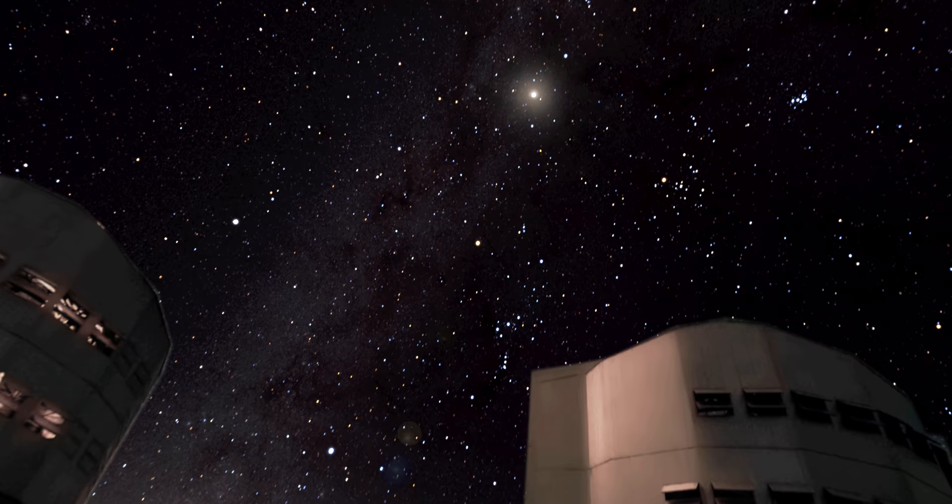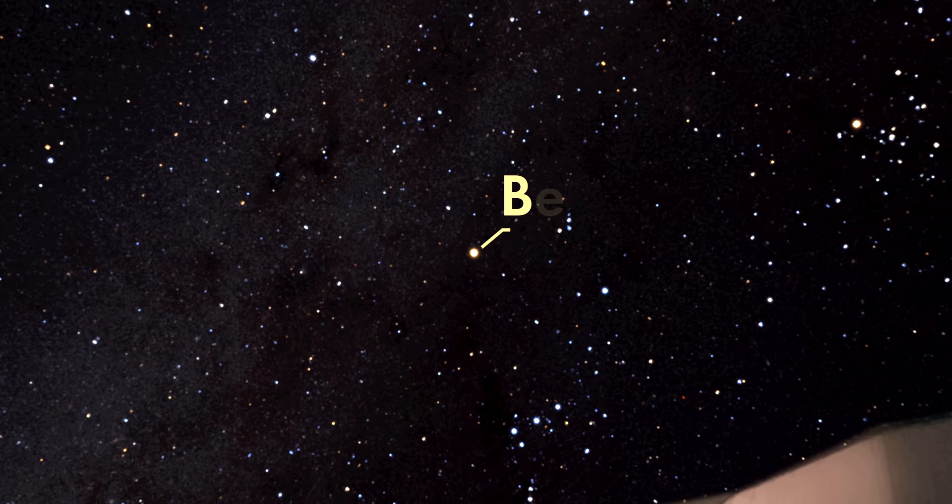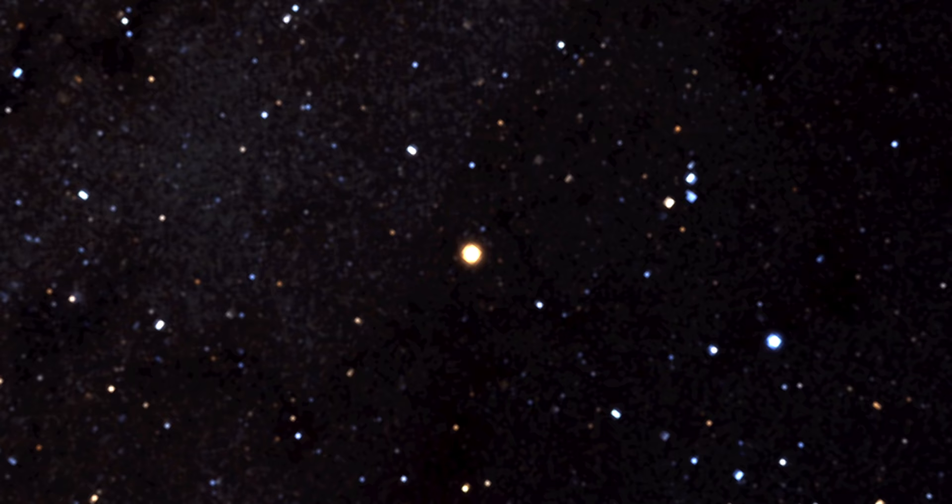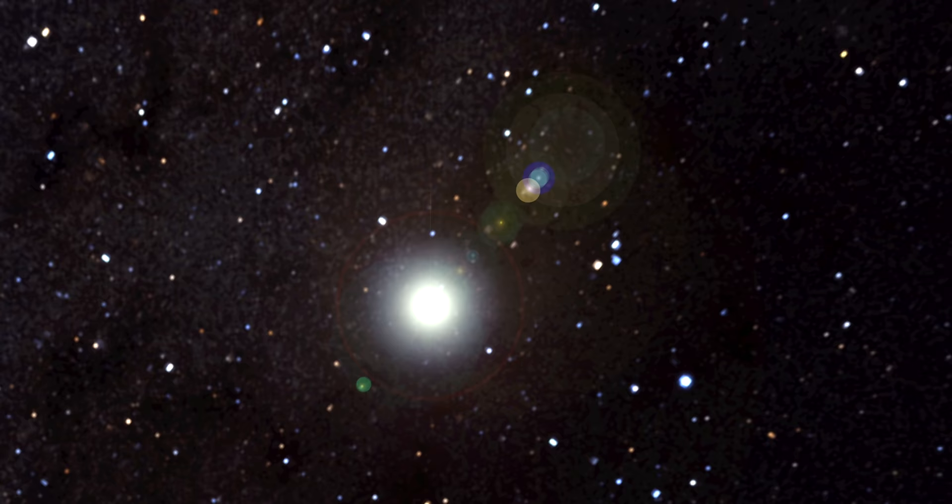Take the red supergiant Betelgeuse, for example, in our own Milky Way galaxy. It is a great candidate to go supernova. Scientists think Betelgeuse will explode any day now in the next few hundred thousand years. When it does, it'll be so bright you can see it in the daytime. And it will rival the full moon's brightness at night.